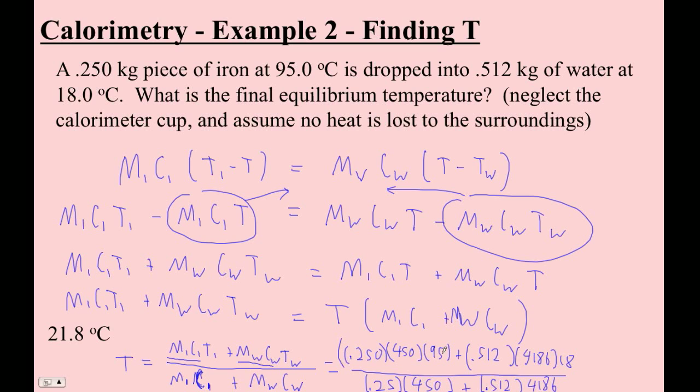Let's see. Make sure you put the numerator in parentheses, and then the entire denominator in parentheses. Or if you've got that fancy new upgrade for the TI-84, do it with a fraction. Okay, so parentheses 0.25 times 450 times 95 plus 0.512 times 4186 times 18. And now I'm right parenthesis, ending the top of the numerator, starting the denominator,